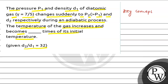That is very simple. Because we are given that this is an adiabatic change. So for an adiabatic process, PV raised to power gamma equals to constant.